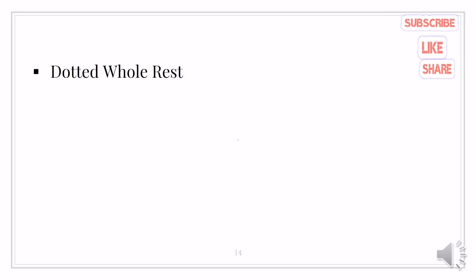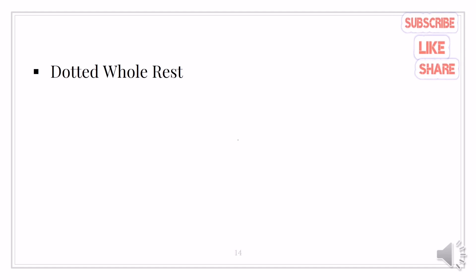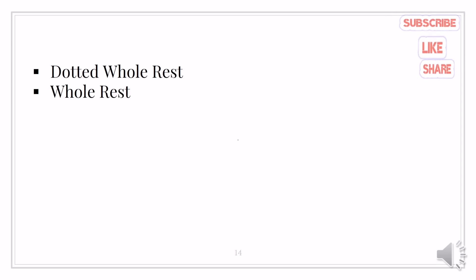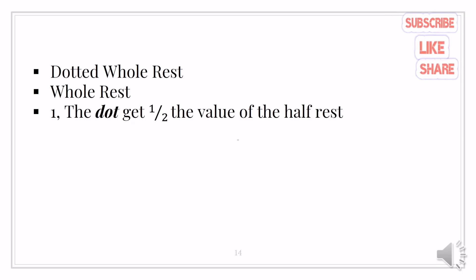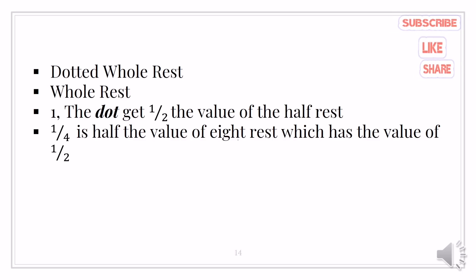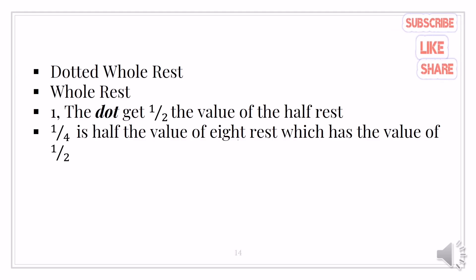What kind of dotted rest receives six beats? That is the dotted whole rest. What dotted rest has the longest duration? That is the whole rest. What is the value of the dot in a dotted half rest? The value of the dot in a dotted half rest is one. What is the value of the dot in a dotted eighth rest? The value of the dot in a dotted eighth rest is one fourth, because one fourth is half the value of an eighth rest which has the value of one half.